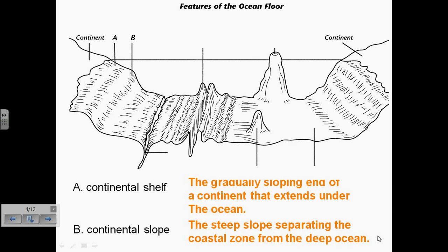One is the continental shelf. The continental shelf is an area that shows the gradually sloping end of a continent that extends under the ocean. As you're going into the ocean, that's the first thing you meet.